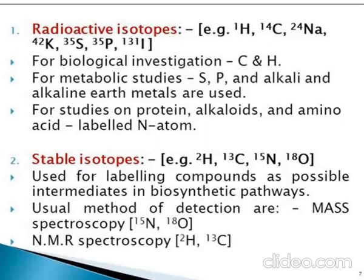Stable isotopes are also useful for labeling compounds as possible intermediates in the biosynthetic pathway. The usual method of detection is mass spectroscopy, where N-15 and O-18 are used, and NMR spectroscopy, where deuterium (2H) and 13C are used.